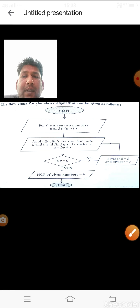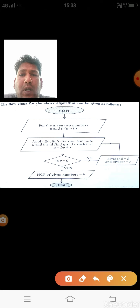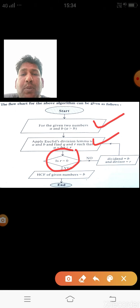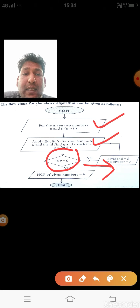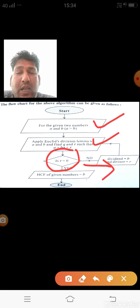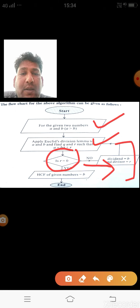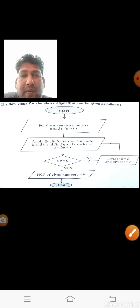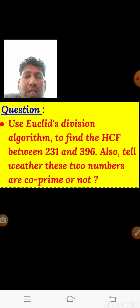Here is a flowchart: given two numbers to find the HCF, first identify which value is greater. If a is greater than b, divide a by b and write it as a = bq + r. If the remainder is 0, then HCF is b. If not, the divisor becomes the new dividend and the remainder becomes the new divisor, and we repeat the process.